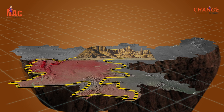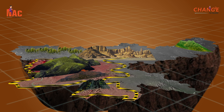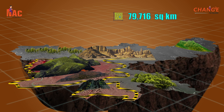Chhota Nagpur, actually a series of plateaus, hills, and valleys, covers nearly the entire state and consists primarily of crystalline rocks. The total area of Jharkhand is 79,716 square kilometers and it ranks 15th among other states.